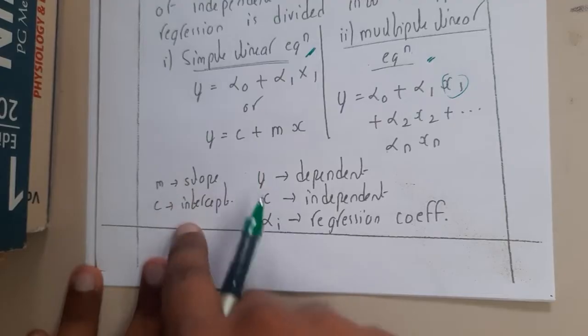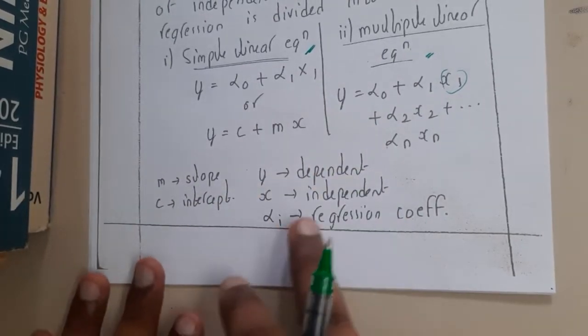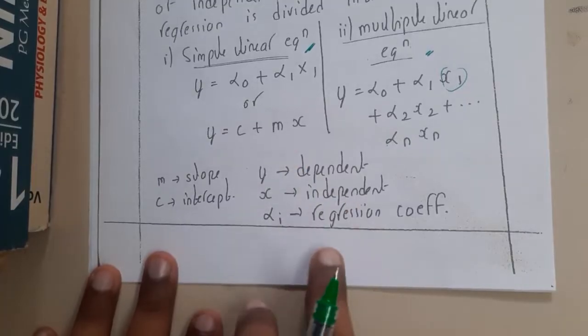These are some basic terminology: m is the slope, c is the intercept or constant, y is the dependent variable, x is the independent variable, and alpha_i is the regression coefficient.